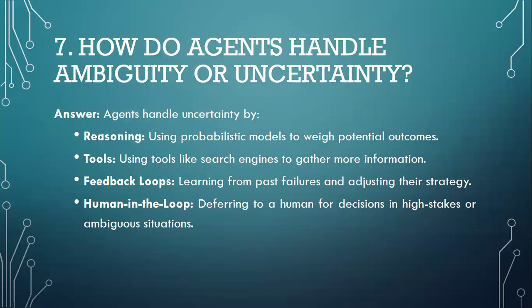Moving to question number seven: How do agents handle ambiguity or uncertainty? Agents handle uncertainty by reasoning — using probabilistic models to weigh potential outcomes; Tools — using tools like search engines to gather more information; Feedback loops — learning from past failures and adjusting their strategy; Human in the loop — referring to a human for decisions in high-stakes or ambiguous situations.